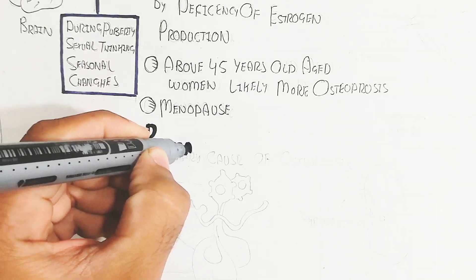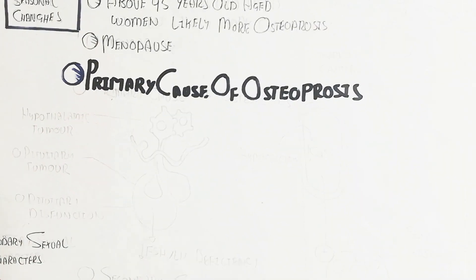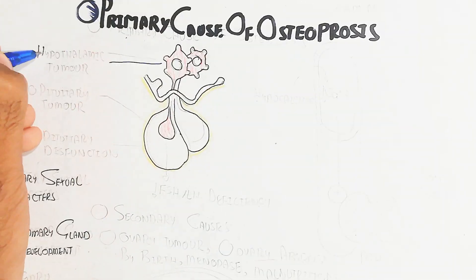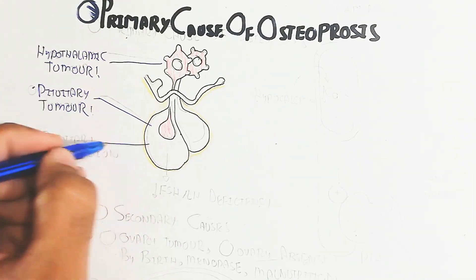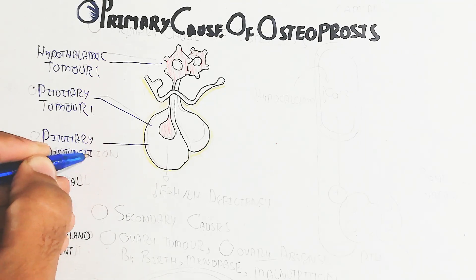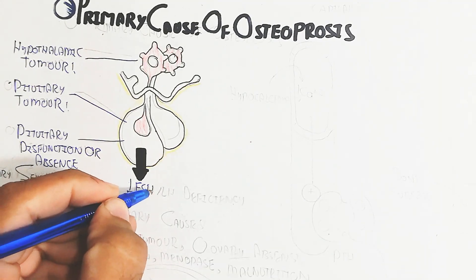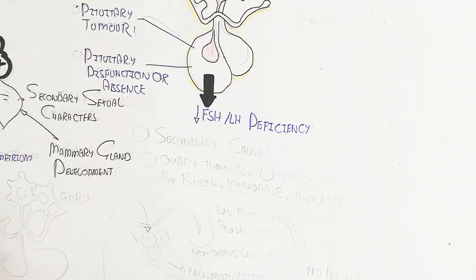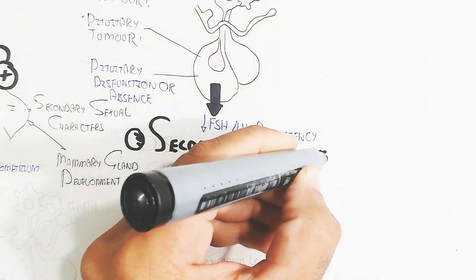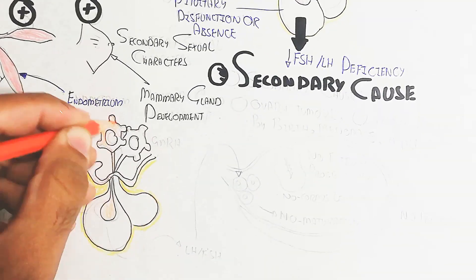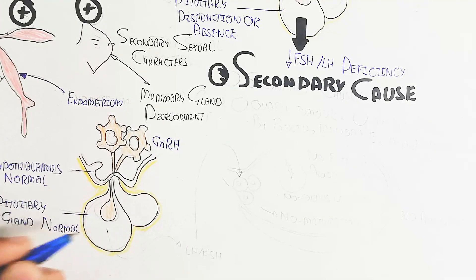The primary causes of osteoporosis involve pituitary gland and hypothalamus dysfunction, leading to reduced or absent FSH and LH production. This includes hypothalamus tumor, pituitary tumor, pituitary dysfunction, or congenital absence of the pituitary gland. Without FSH and LH, the ovary is not triggered for ovulation, the menstrual cycle is inhibited, corpus luteum does not form, and estrogen production is reduced.